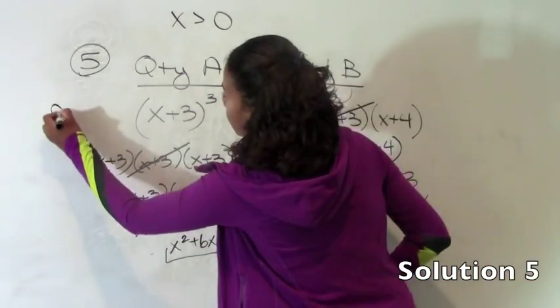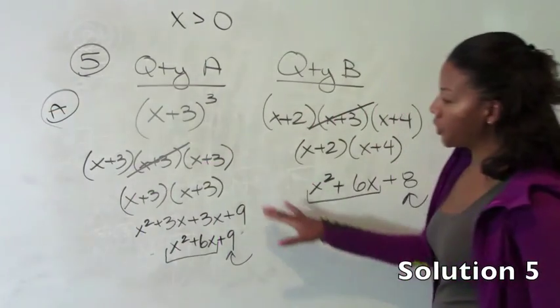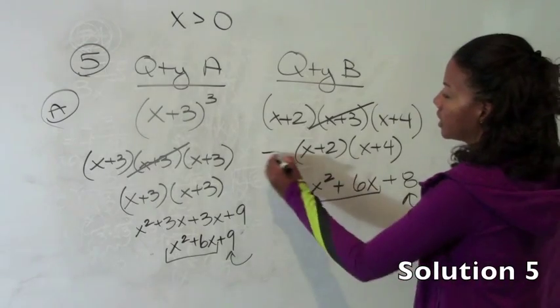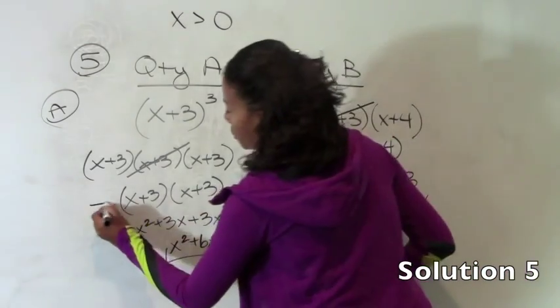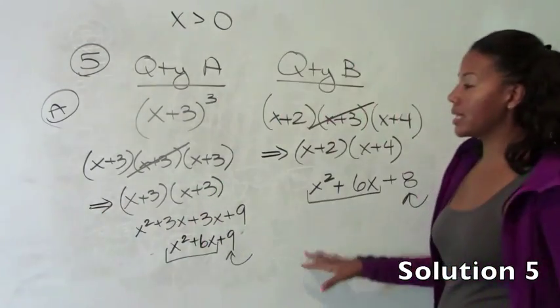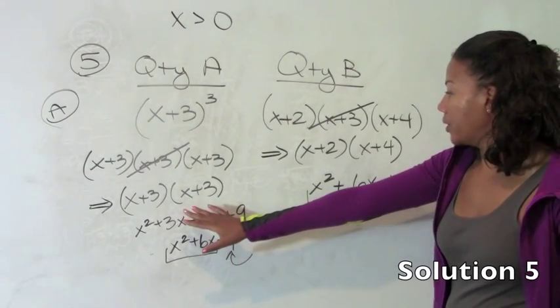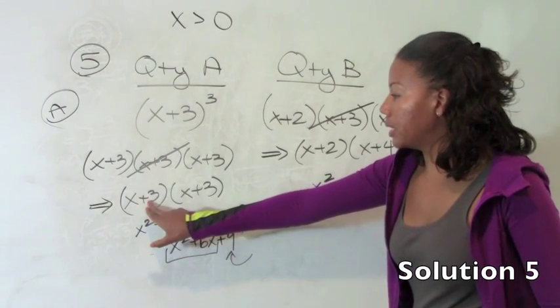So A is the answer. If you didn't think to go through and unfactor these that is fine. Once you get to this point then you would have to choose values for x and you would consistently see that this column is larger. So you can plug in 1 over here.